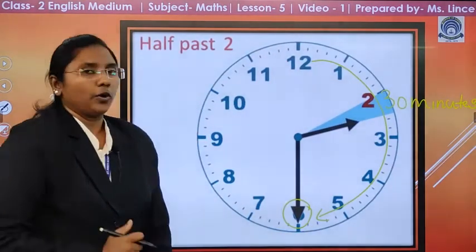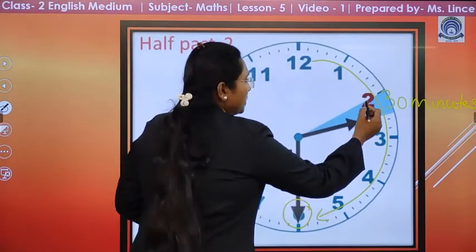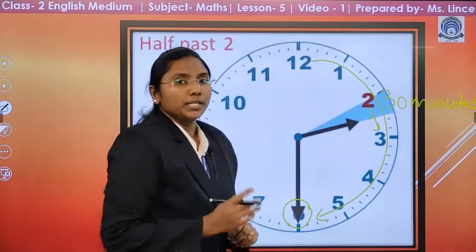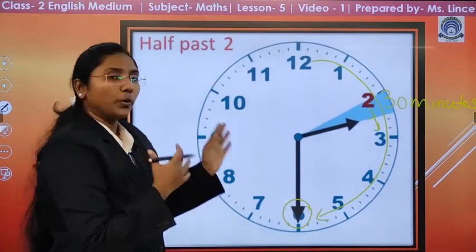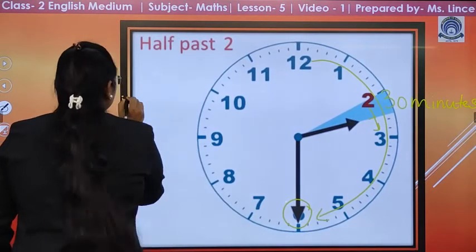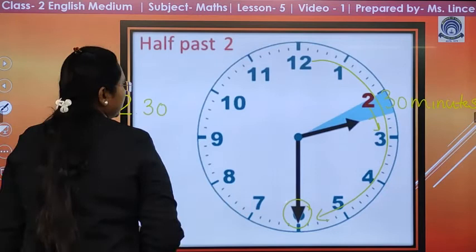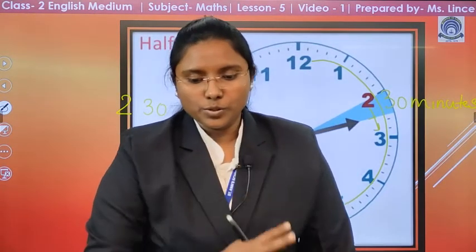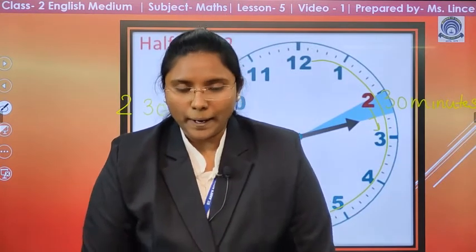Now, here, the hour hand is between 2 and 3. So, the clock is showing the time is 2.30. That is, 2 past 30, half past.